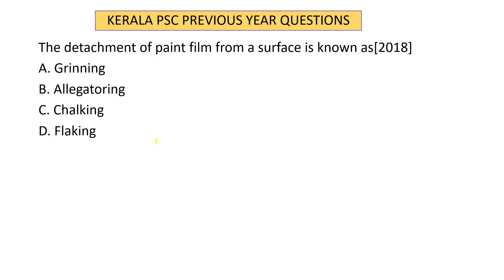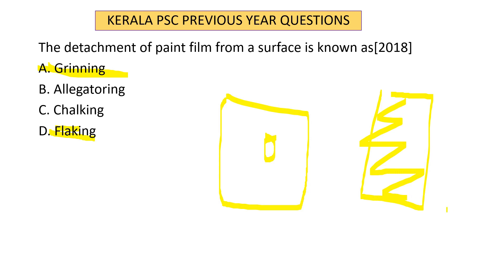Question 8: The detachment of paint film from a surface is known as flaking. If the paint peels off, that is called flaking. Question 9: Grinning is a defect where a coat of paint is too thin and the background beneath remains visible through the paint.